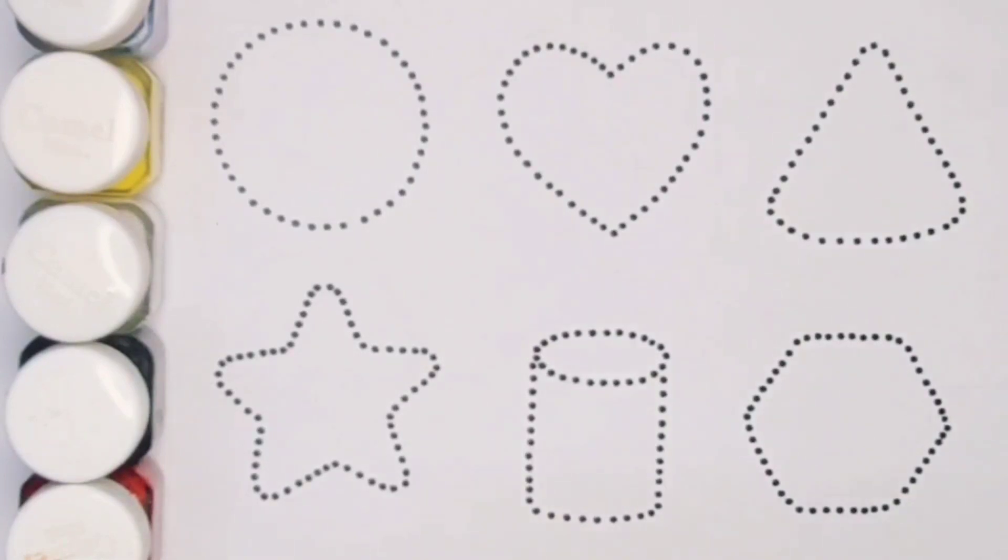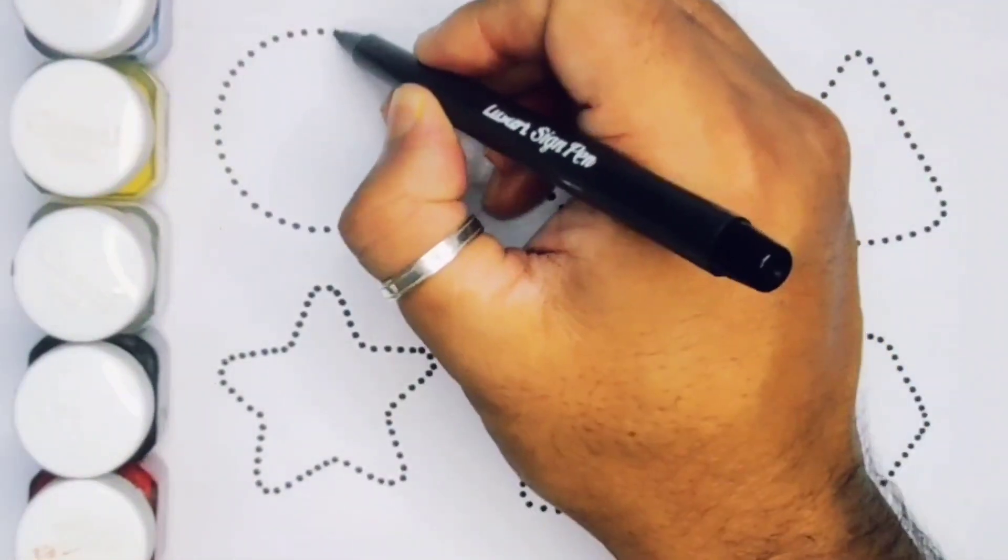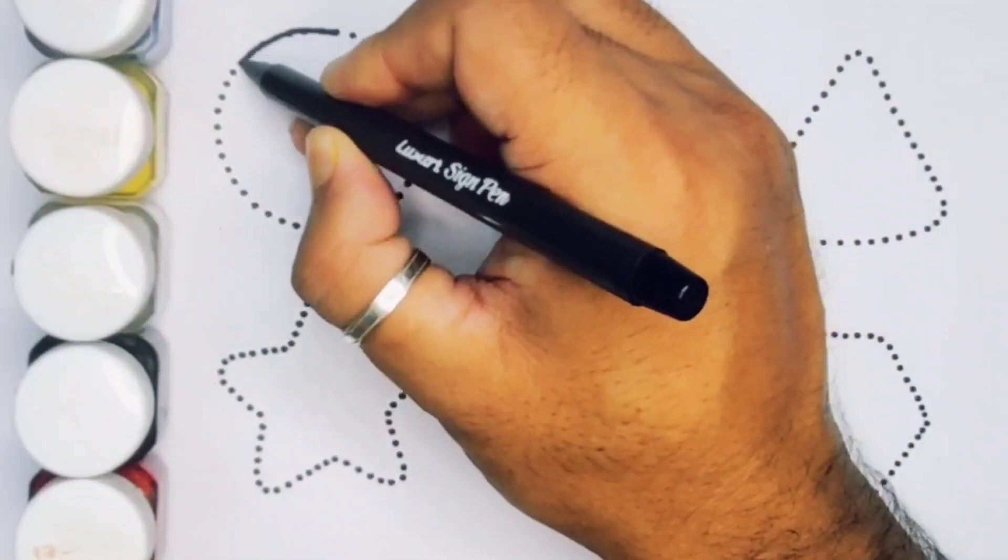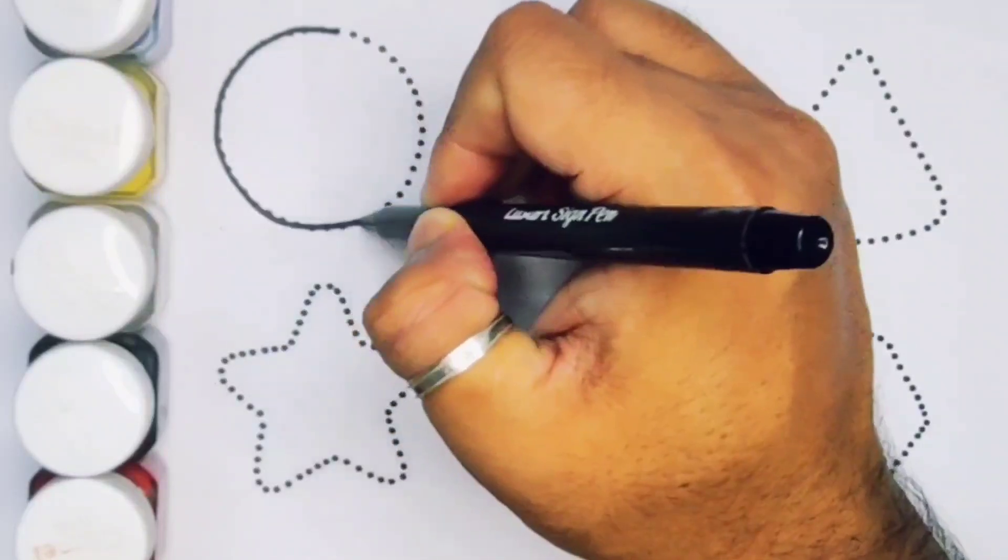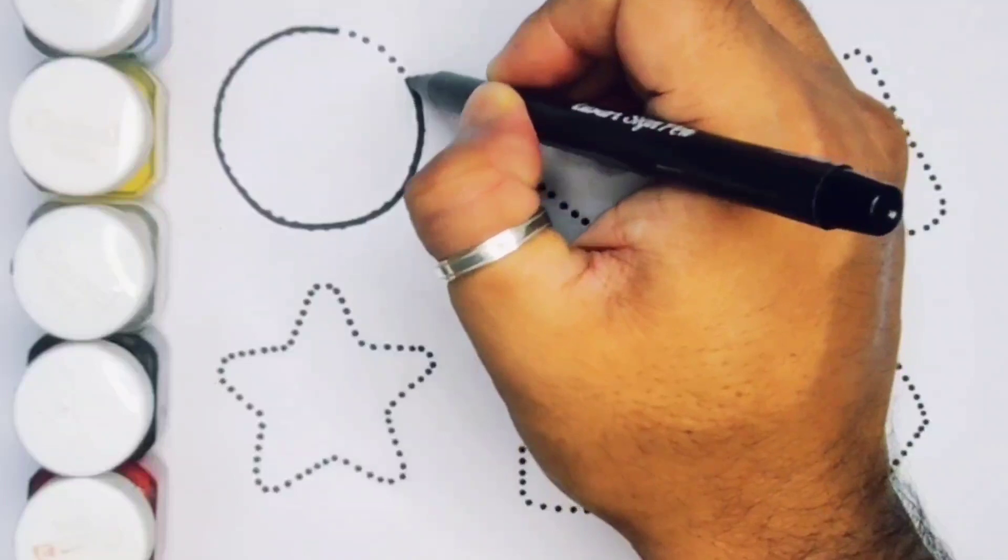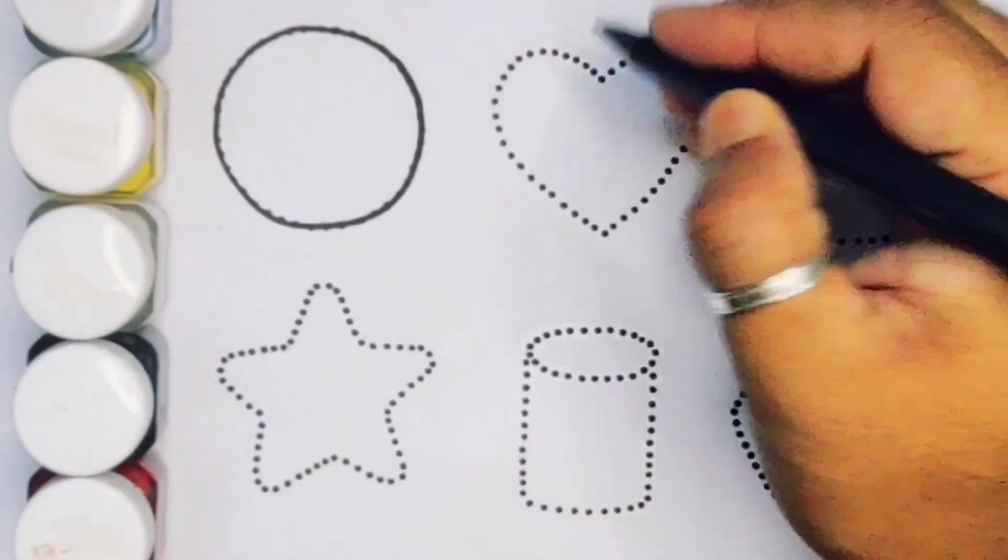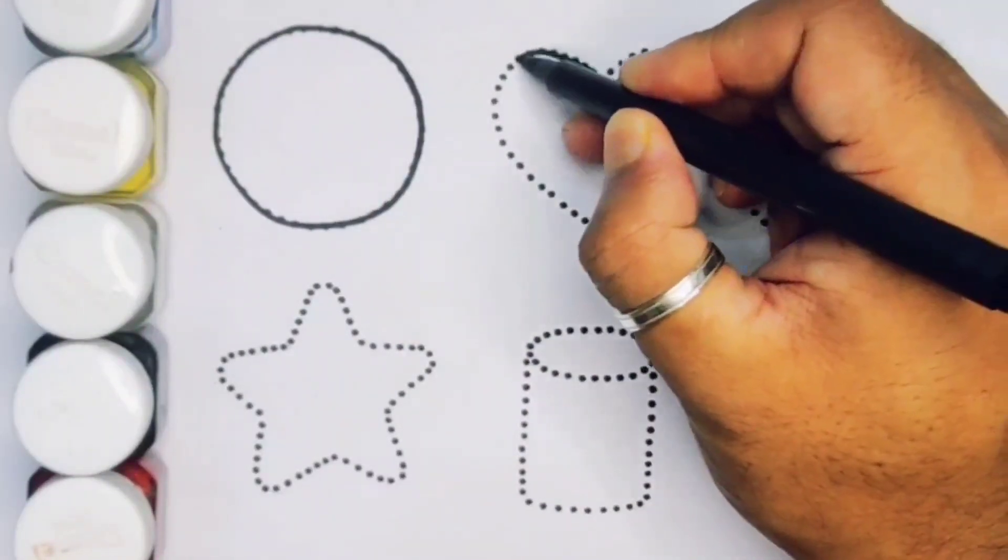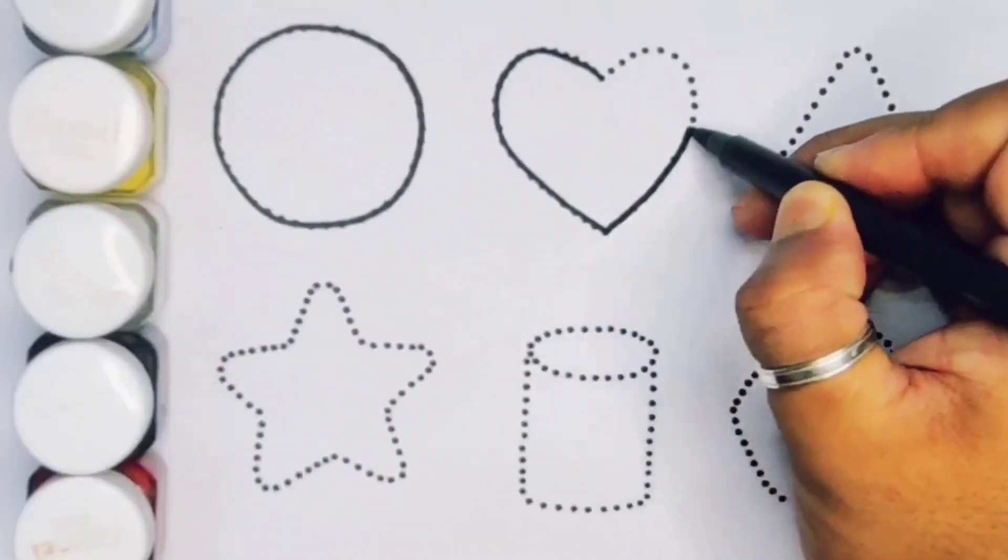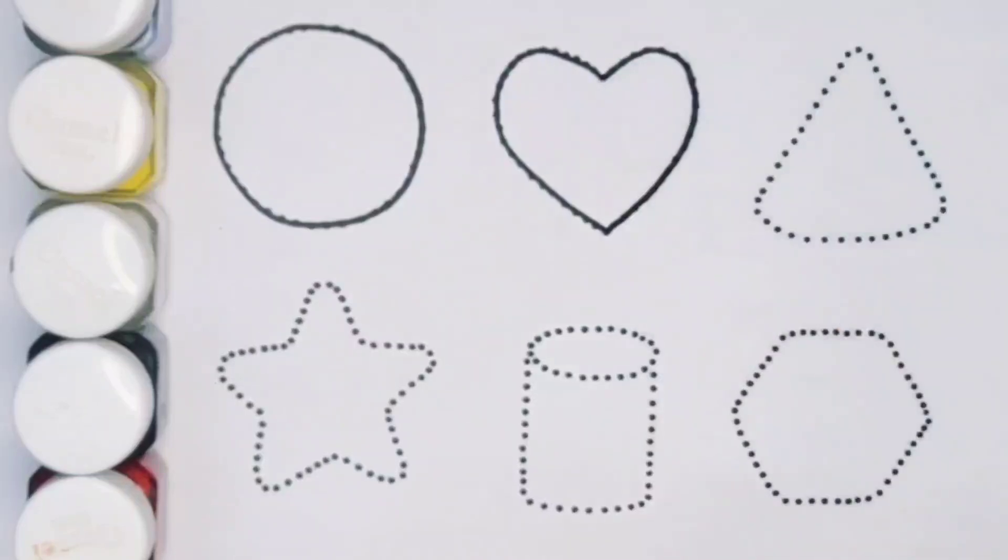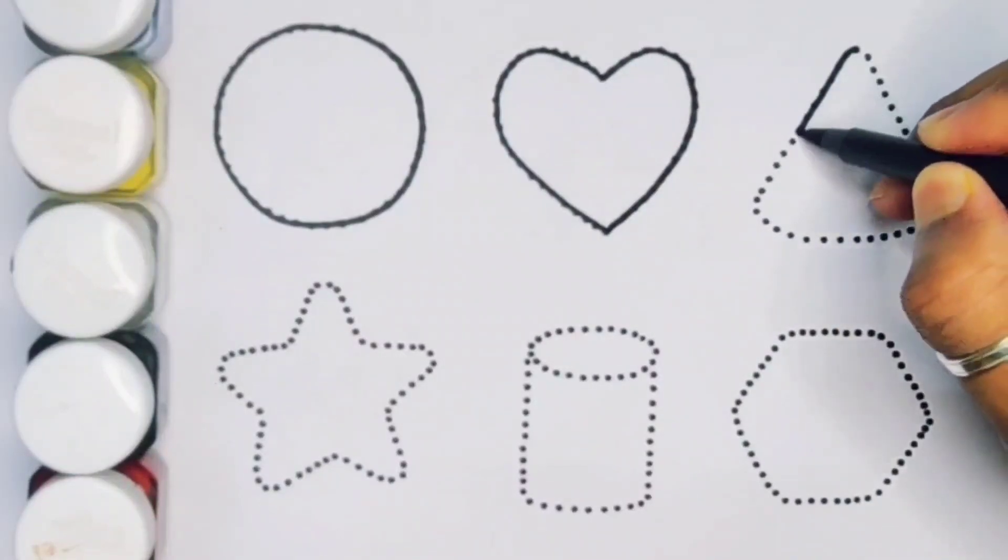First we are going to draw the shapes. Circle. Next Heart. Next Triangle.